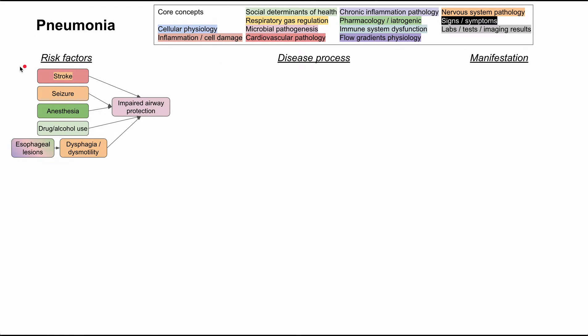There's a set of risk factors that increase your chance of getting pneumonia by impairing your airway protection. For instance, you can have a stroke or a seizure — both make it difficult to swallow and get secretions from your mouth down to your stomach rather than into your airway. This can also be iatrogenic; during anesthesia you can get impaired airway protection. Drug and alcohol use can cause this as well — a drunk person or someone on opioids or benzos may be unable to swallow normally. Esophageal lesions can also cause dysphagia and dysmotility, leading to impaired airway protection.